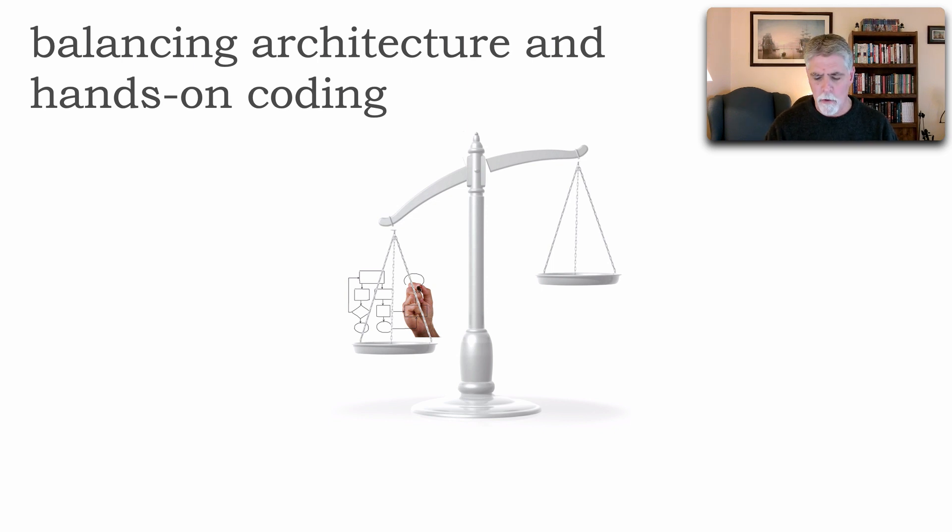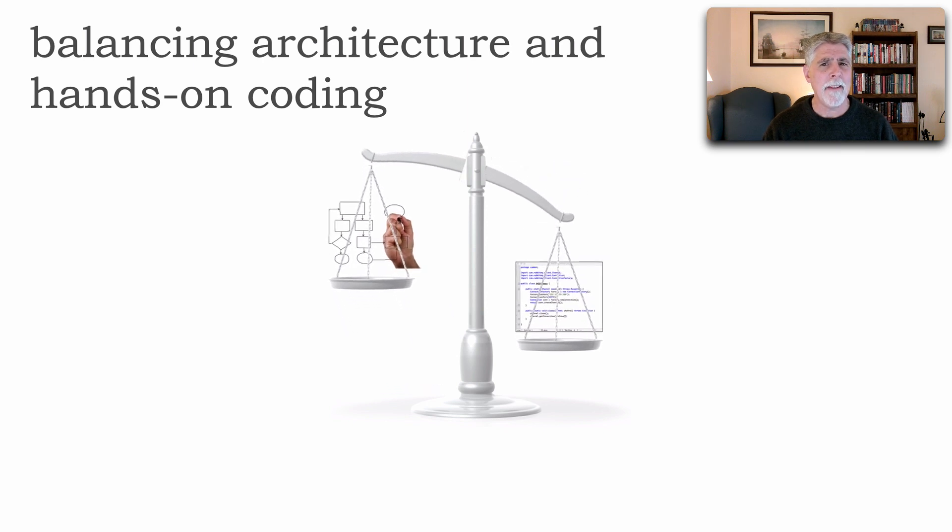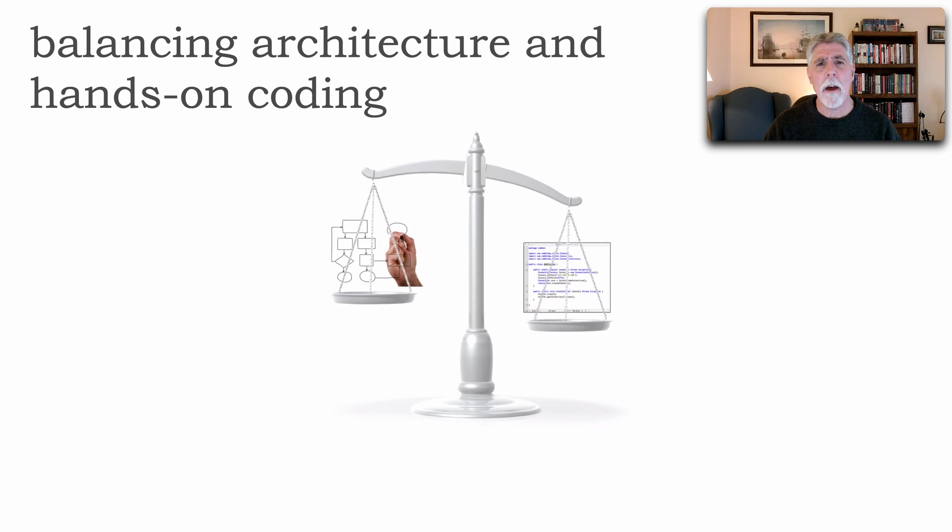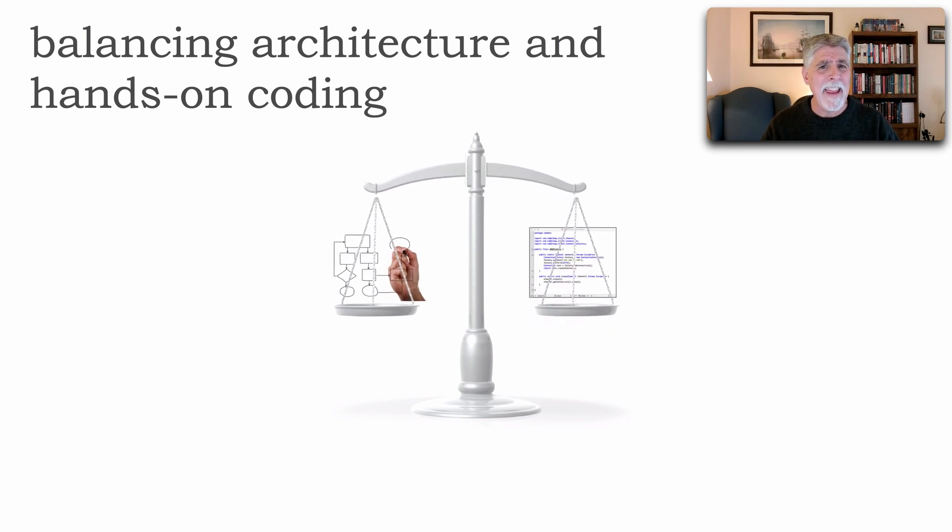But I've also seen where architects do code and unfortunately that balance isn't maintained and we spend too much time coding, especially when we have some challenging code, and now not enough time architecting. So the real trick to being a hands-on architect is being able to strive for a balance where we maintain our architecture activities and that role of an architect while still being able to develop and maintain that technical depth.